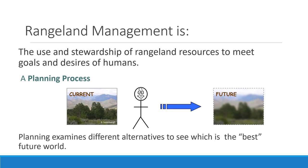What rangeland management is, if you step back a little bit, is basically a planning process. A planning process is where you take an understanding of the current situation and think of ways that you can change it into a desired future condition. A lot of planning has to do with trying to understand what the future should look like, how you could assess your current situation, and then the middle step is what can we do to go from where we are to where we want to be.